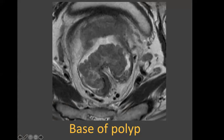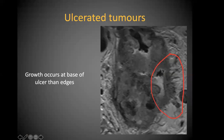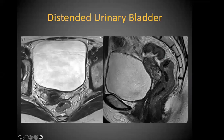A polypoid base example: linear dark structures at the polyp base are normal vessels, not T3 tumor. For ulcerated tumors, always look at the base of the ulcer since that is where growth beyond the muscularis is most likely to occur.